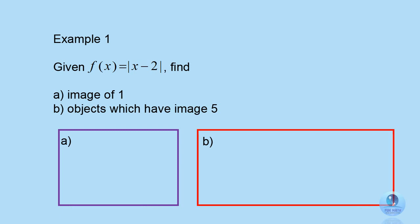Now let's look at the first example. Given a function f of x equals to modulus x minus 2. Find the image of 1. To answer question a, just follow the same steps from my previous video. Substitute 1 into x and you get modulus negative 1. In modulus, you have to remember you only take the positive value, so modulus negative 1 equals to 1.